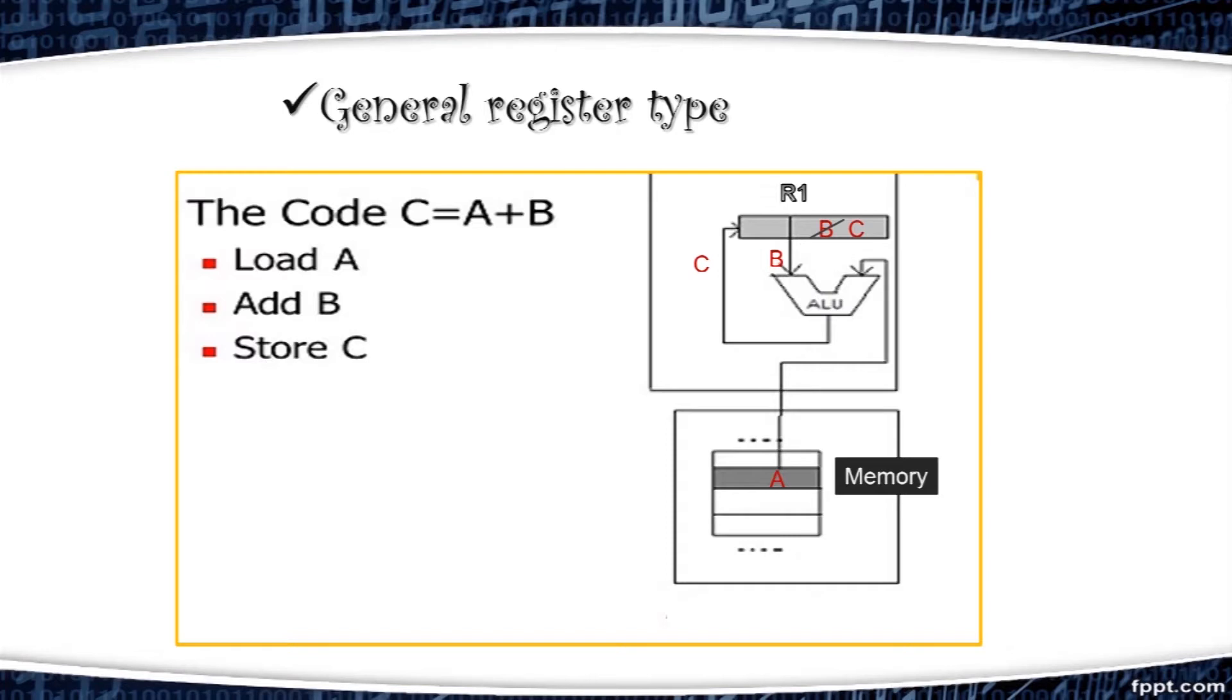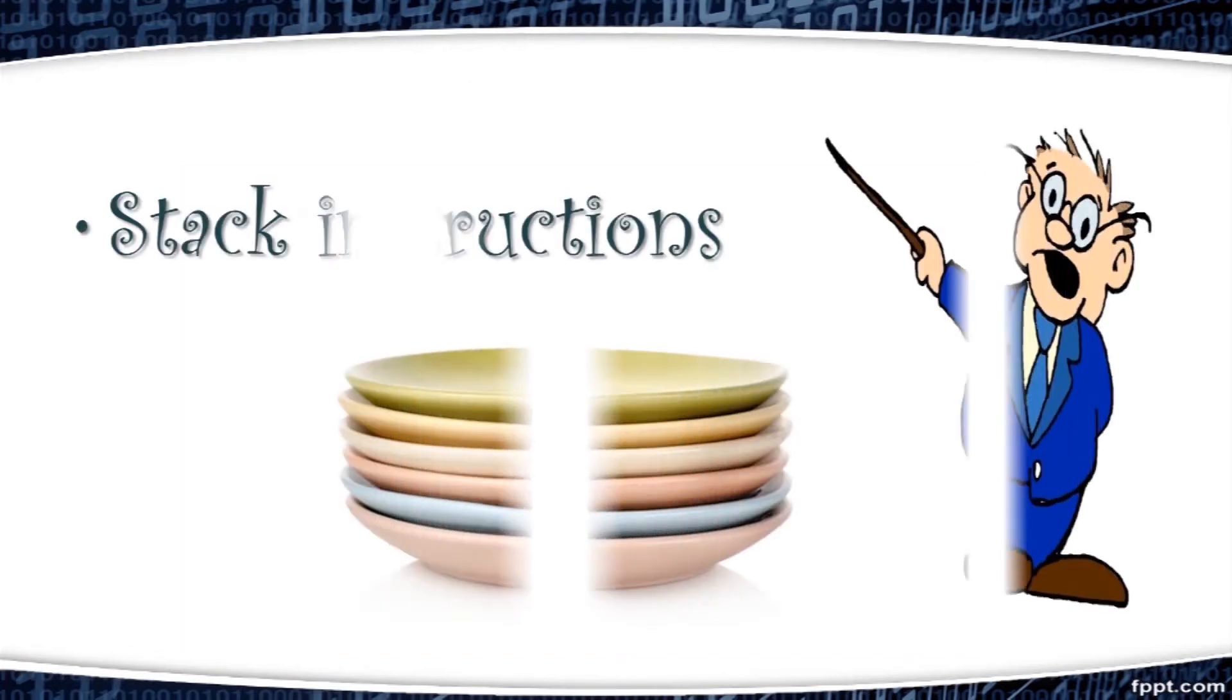And result will be stored into R1 register. R1 arrow R1 plus MY. It contains two address fields, one for register R1 and the other for the memory address Y.